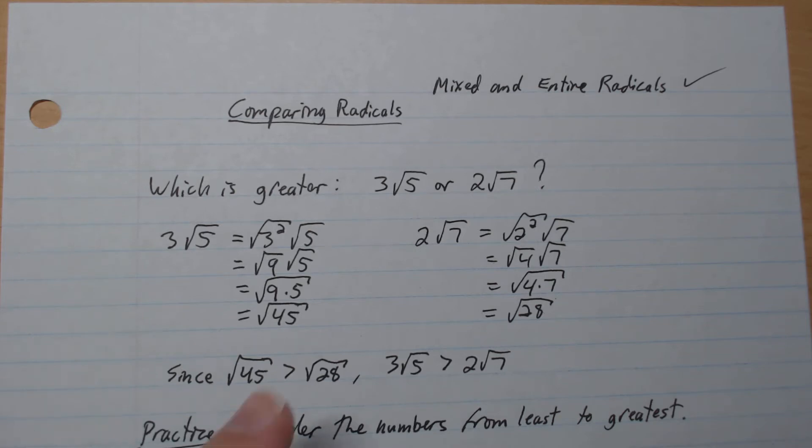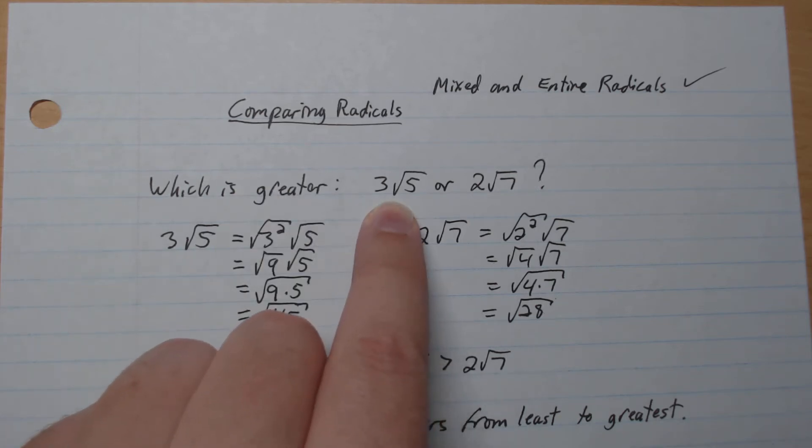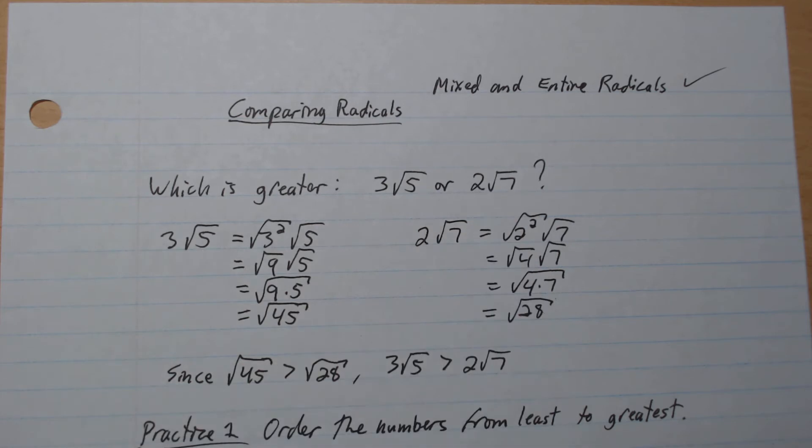So we're going to look at this question: which is greater, 3 root 5 or 2 root 7? And so what we're going to do is rewrite the mixed radical as an entire radical because it'll be easier to compare.